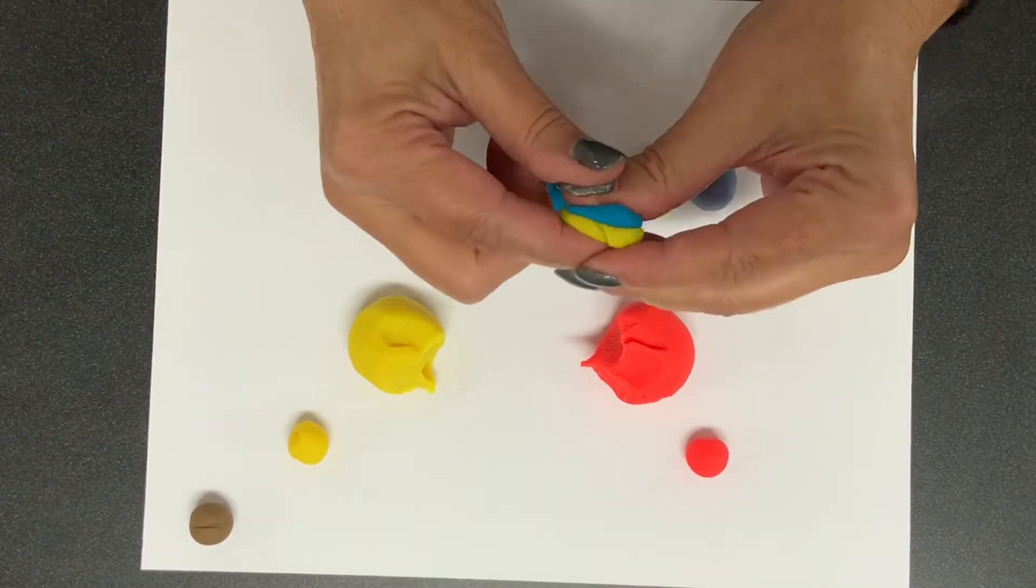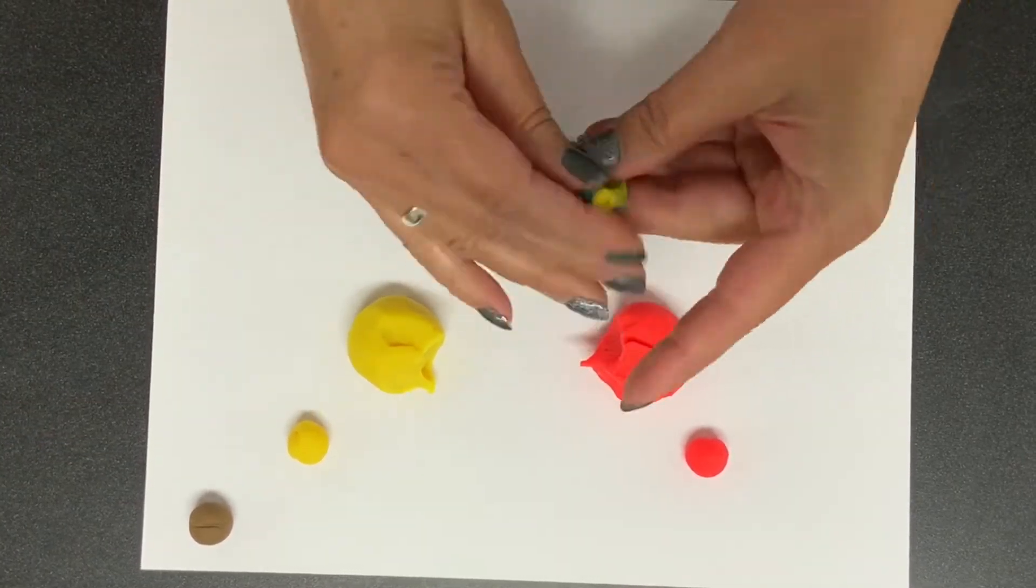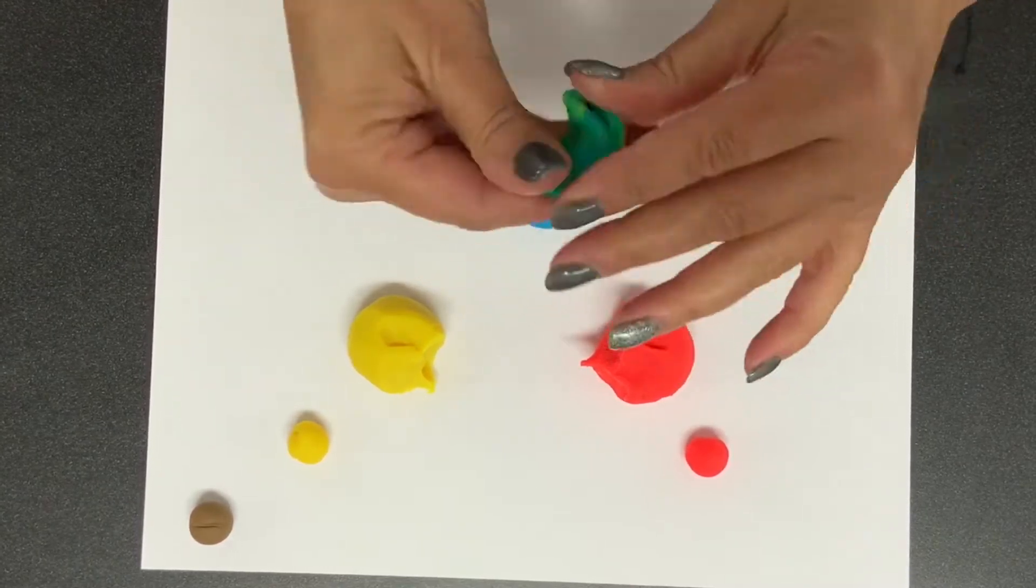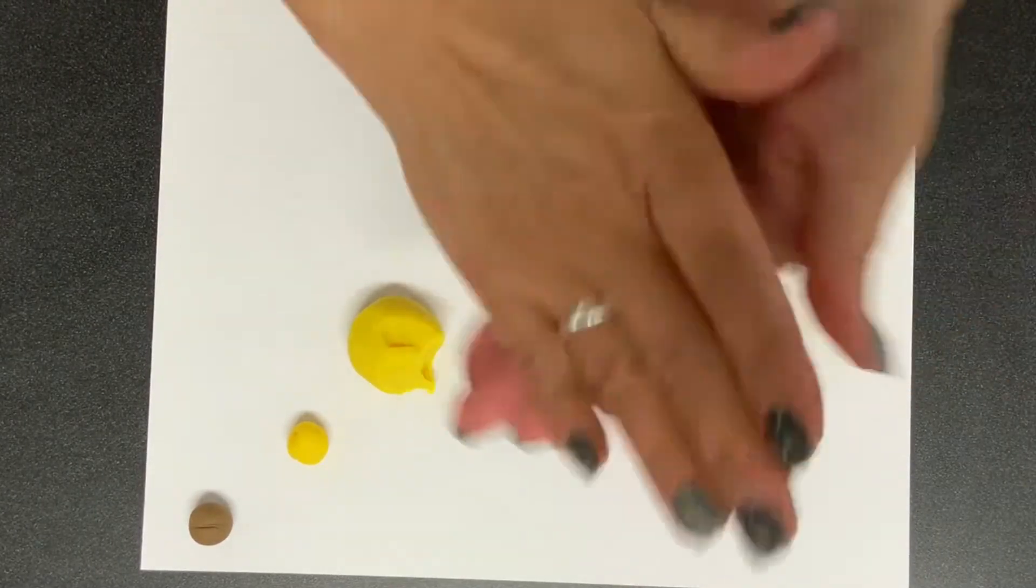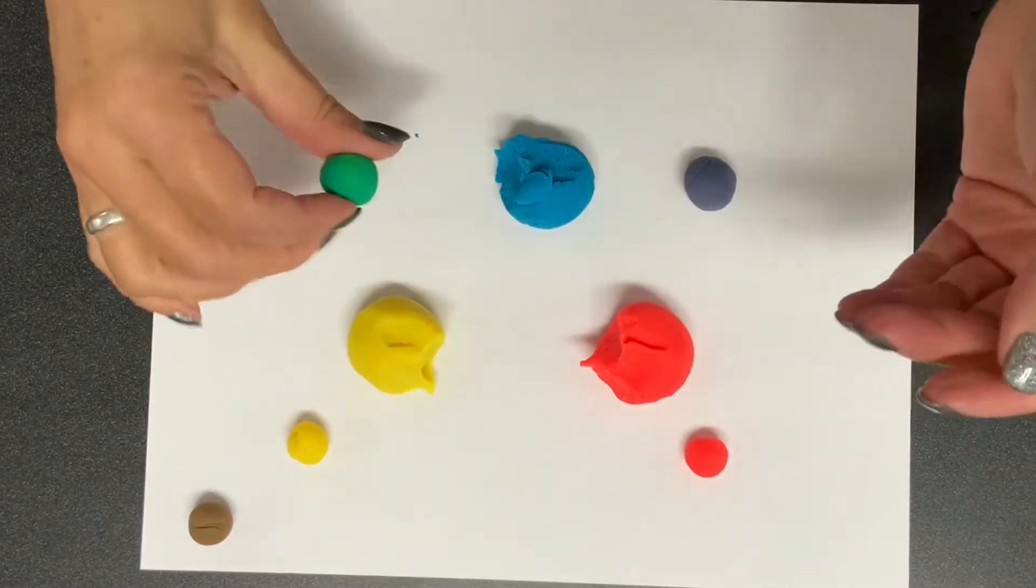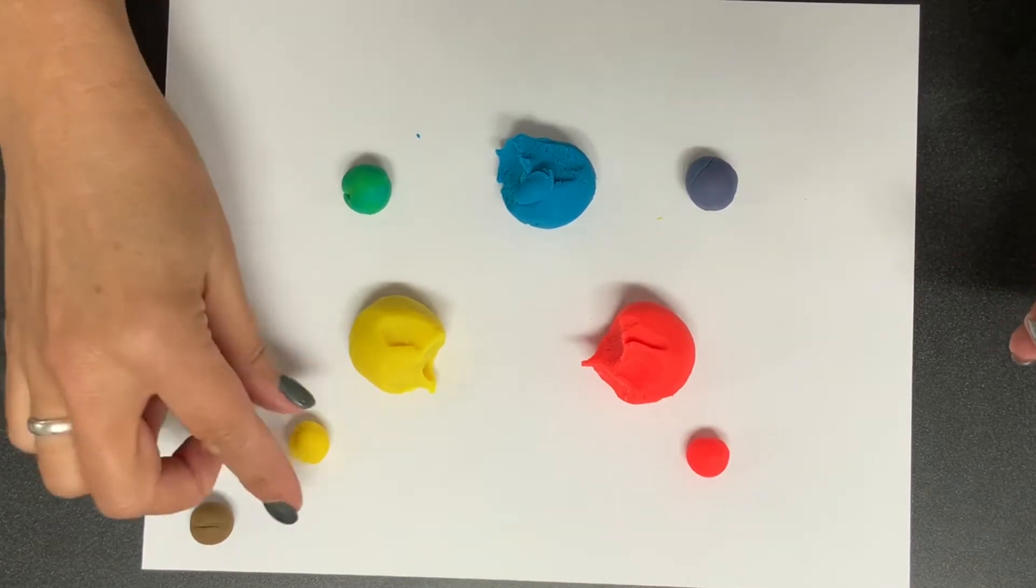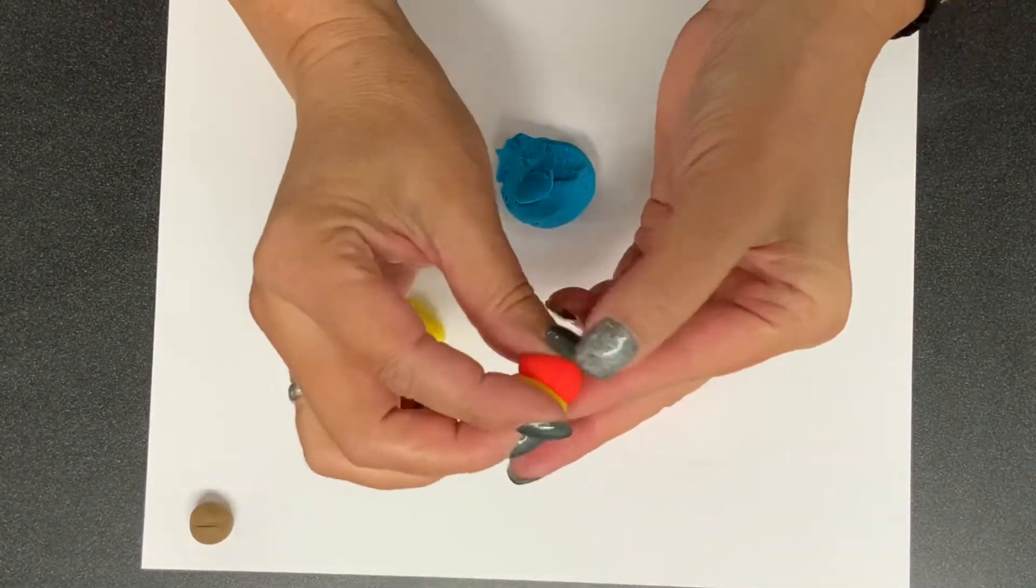Next we're gonna take blue and yellow, you're gonna squish those together and keep kneading and working that dough until you get green. So blue and yellow make green.